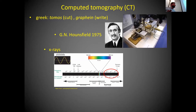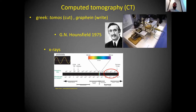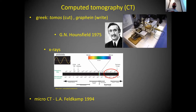CT uses X-rays and can produce much better images, though it delivers more radiation to the sample or patient. The micro-CT started about 20 years after the first CT, due to technological advancements — higher energy sources, better camera detectors — which allowed for greater resolution. In principle, micro-CT uses the same technology as normal CT but with the benefit of higher resolution.